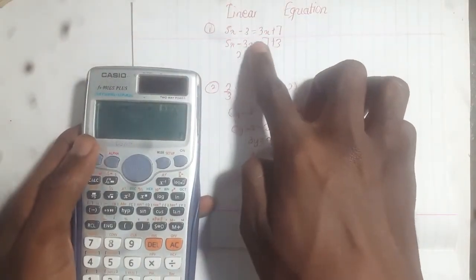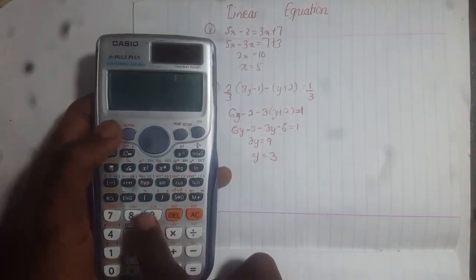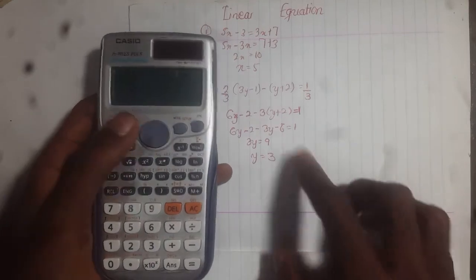So the first one, 5x minus 3 equals 3x plus 7. It can be done on a calculator. So first of all, I'll clear my calculator. So the calculator is ready now.